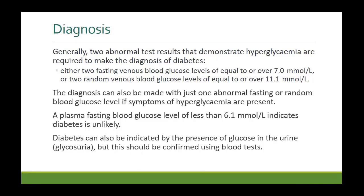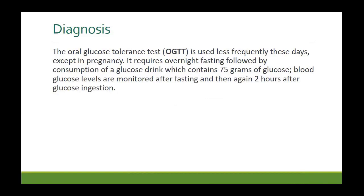Diabetes can also be indicated by the presence of glucose in the urine, but it should be confirmed using blood tests, because glucose in urine can appear in certain kidney diseases. If the renal threshold is low with normal blood glucose levels, glucose can appear in the urine. Another test, which was used quite frequently in the past but not so much now, is called OGTT.